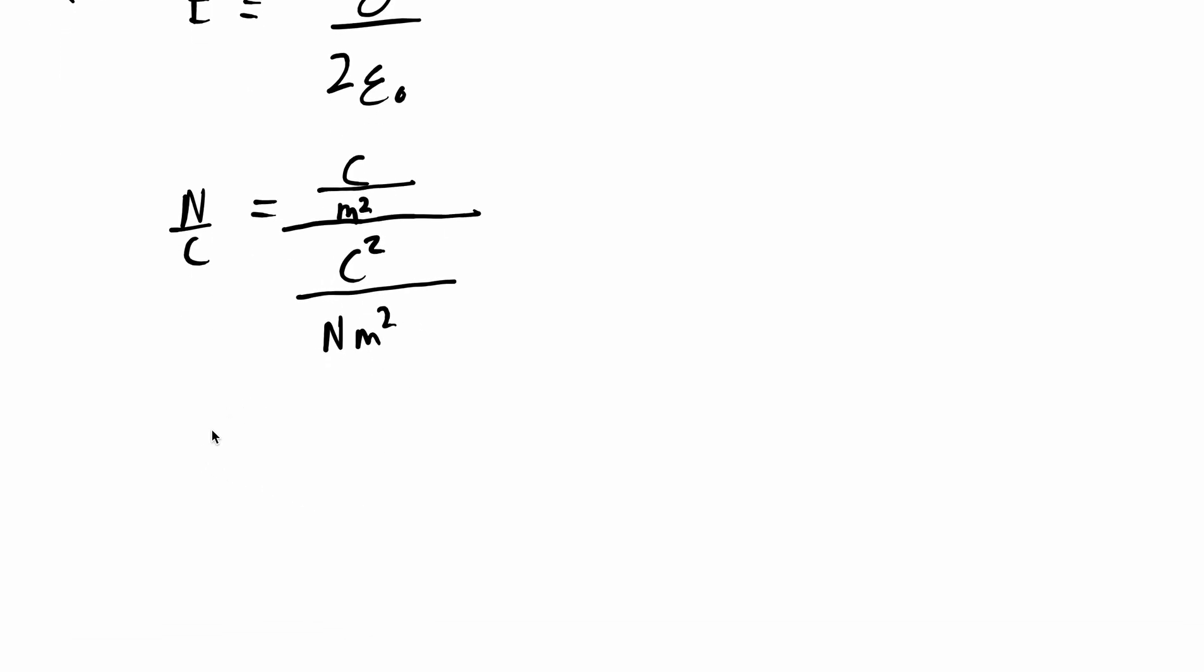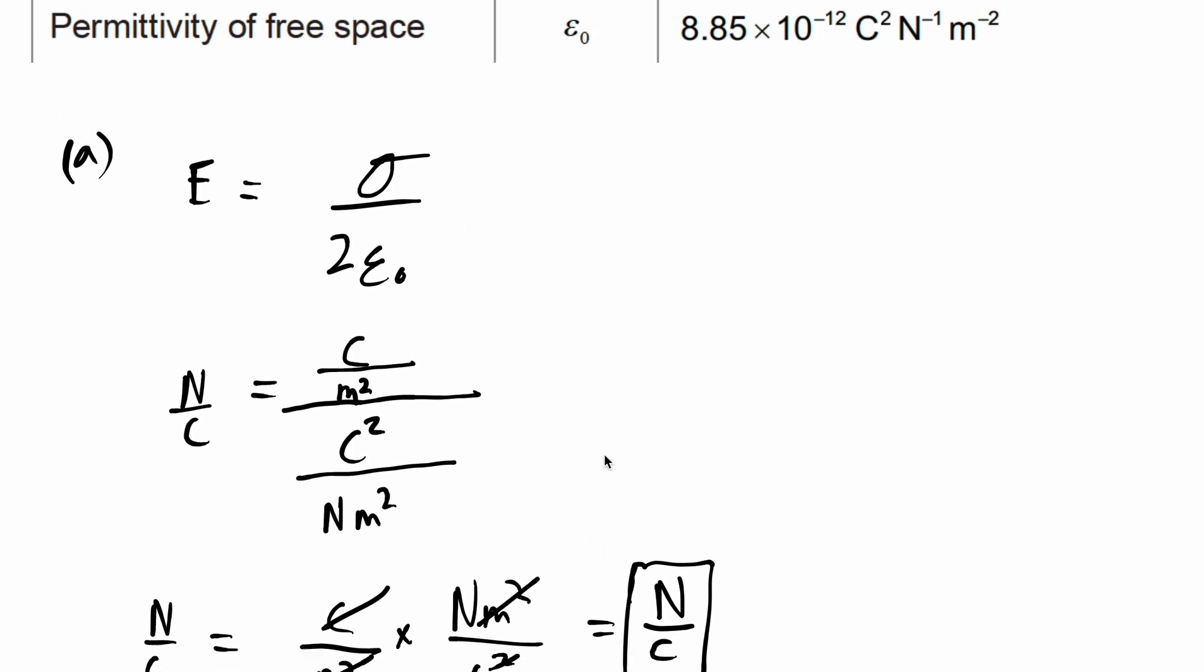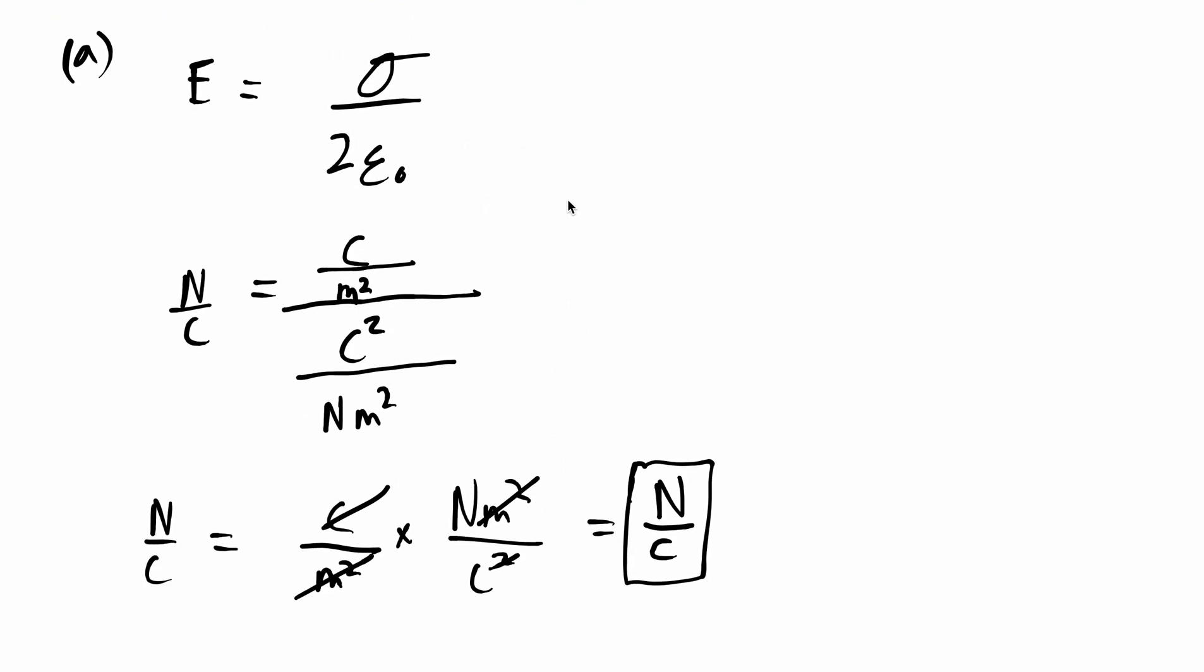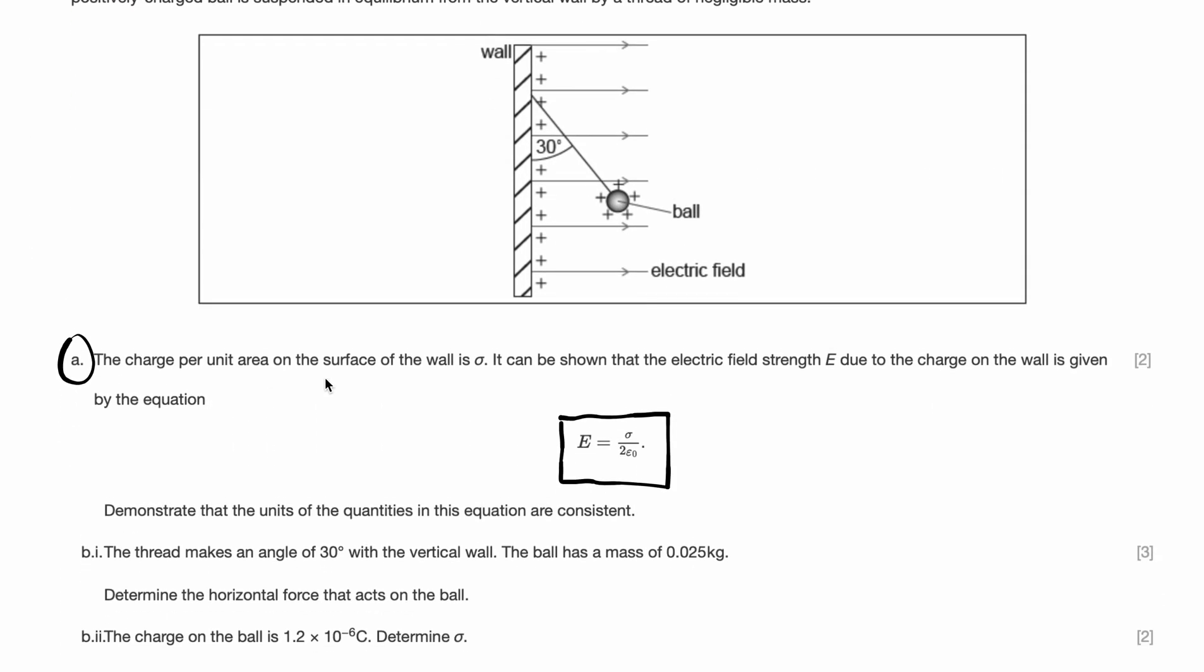That can be written as coulomb per meter square over 2 times. We don't need the 2, so we can leave the 2 out because it doesn't have a unit. And epsilon 0 is coulomb square per Newton meter square. It's just a complex fraction. Now let's rearrange this and see what happens. So Newton per coulomb equals charge per meter square times Newton meter square per coulomb square. Meter square gets canceled, the exponent gets canceled, and we will find that it does equate to Newton per coulomb. And so we can say units are consistent.